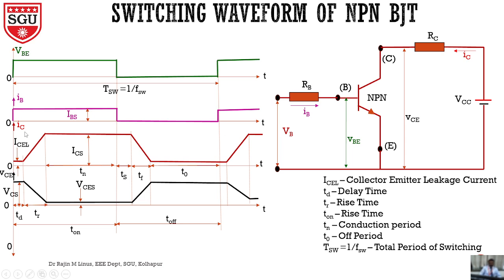With respect to the voltage, the current waveform will also reflect with respect to base-emitter voltage. The current is increasing, then going to 0, then increasing again — so the cycling continues. What is meant by switching time? There is one on period and one off period. The total time is called the total switching time, otherwise it is the reciprocal of switching frequency FSW.